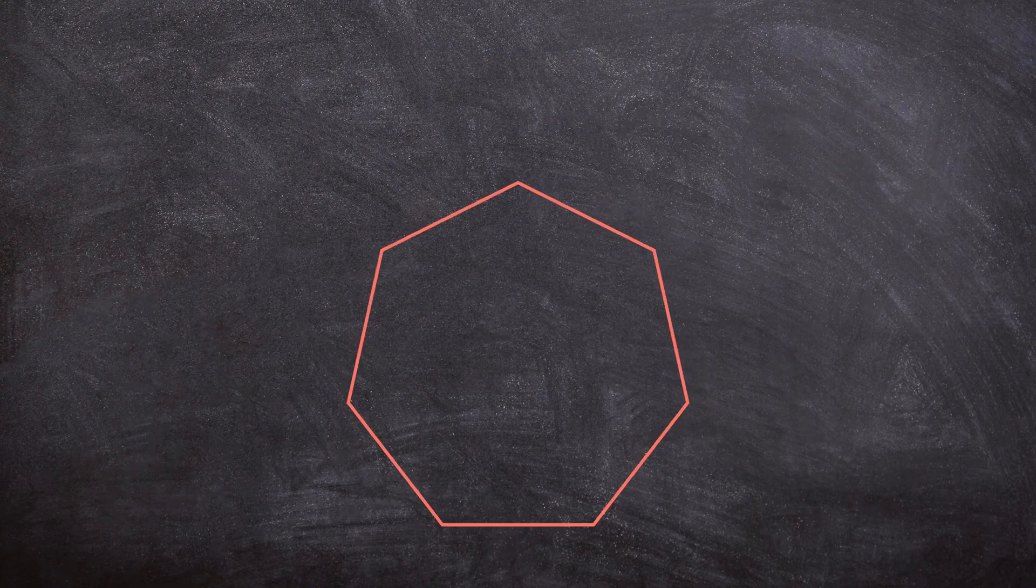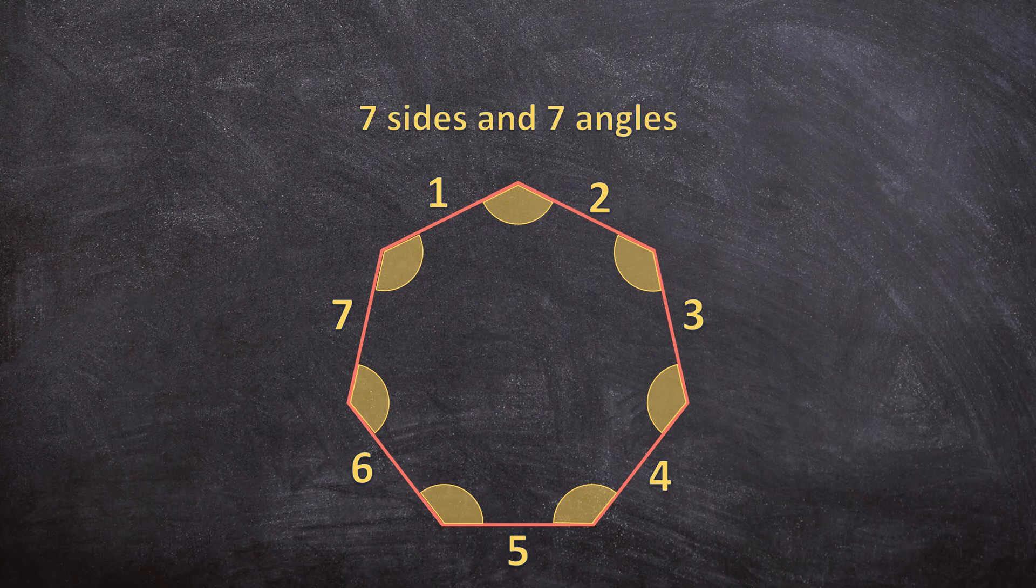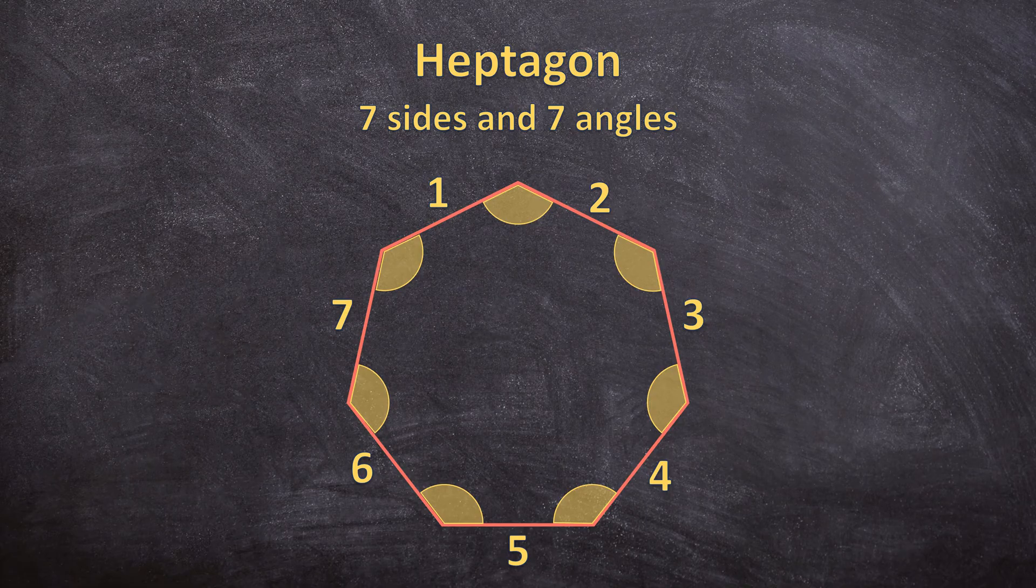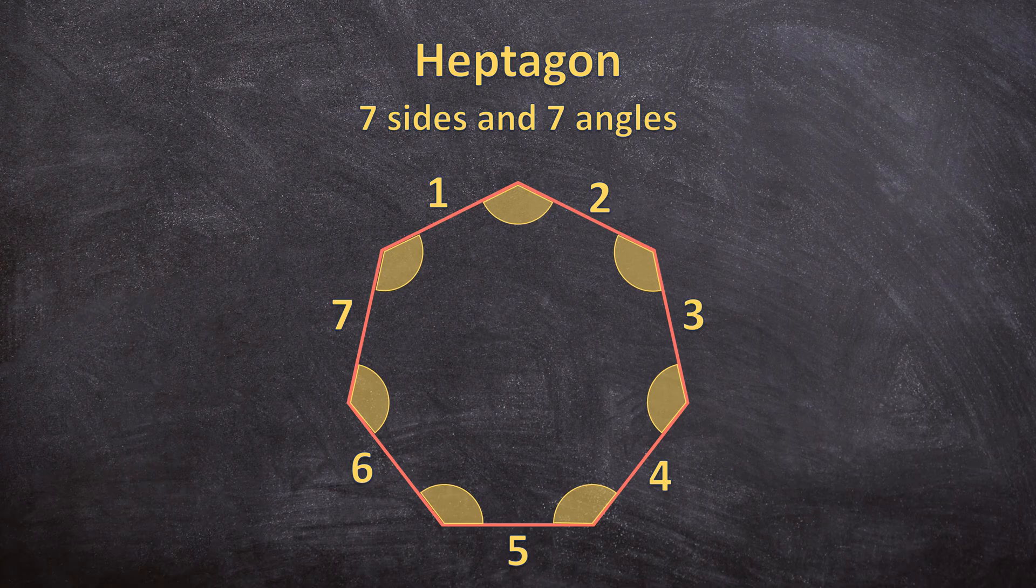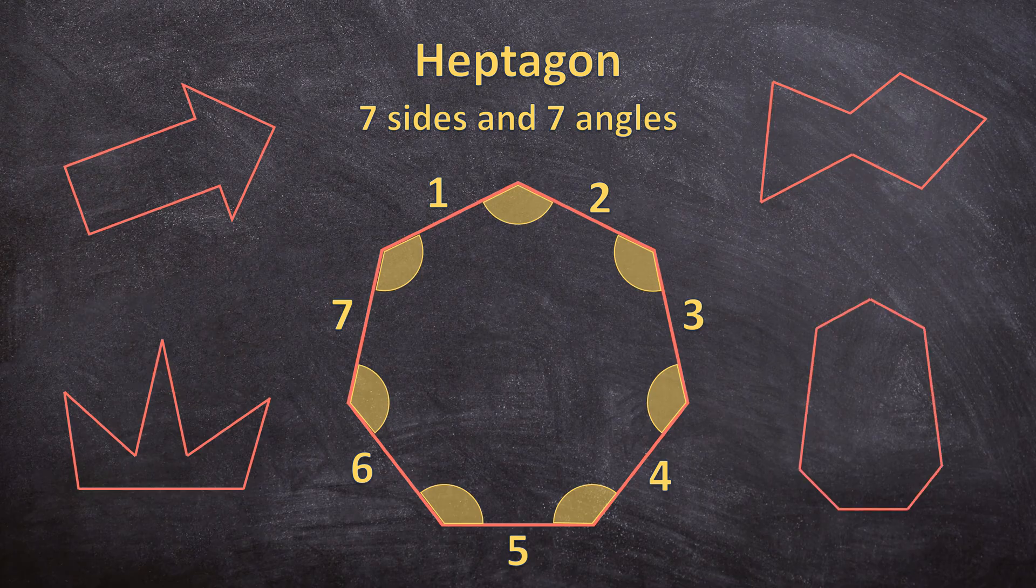And a polygon with 7 sides and 7 angles. This type of polygon is a heptagon. And again here are a few more examples of a heptagon. They all have 7 sides and 7 angles.